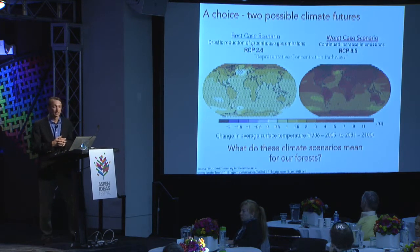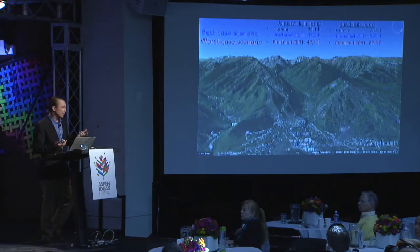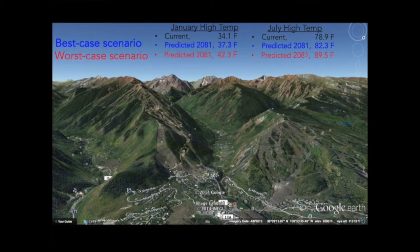What do these different climate scenarios mean for our forests — in particular, our forests in the backyard? I'm showing a Google Earth shot of the Aspen area, highlighting what these two scenarios mean for the mean average temperature here. Currently your January mean temperature is 34 degrees, and your July high temperature on average is about 78.9 degrees. Under the best-case scenario, those temperatures go up to 37 degrees in winter and 82 degrees in summer. However, under the worst-case scenario by the year 2100, the average high temperature here will be effectively 90 degrees Fahrenheit — a change from 78 to 90 degrees in the span of a little over 70 to 80 years.